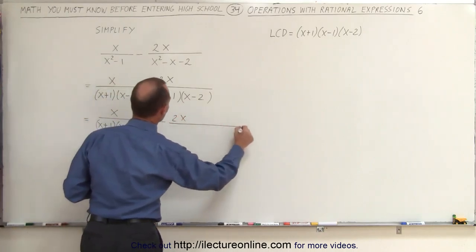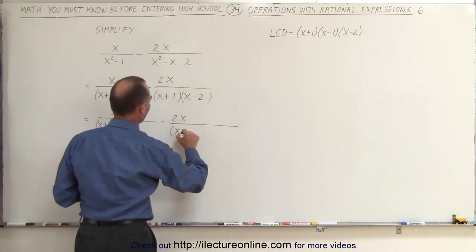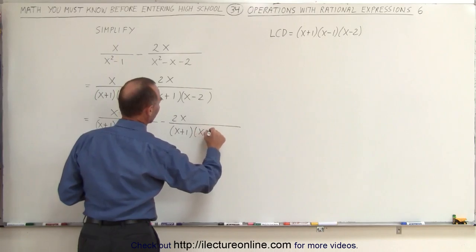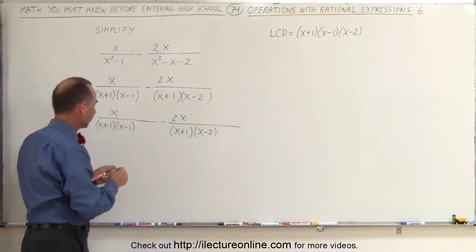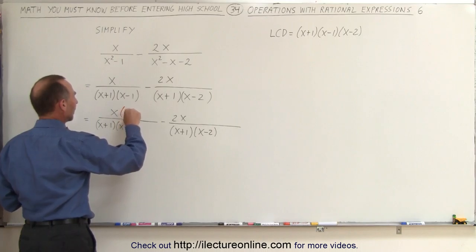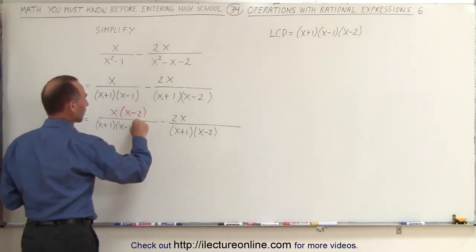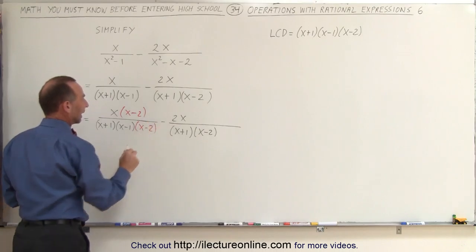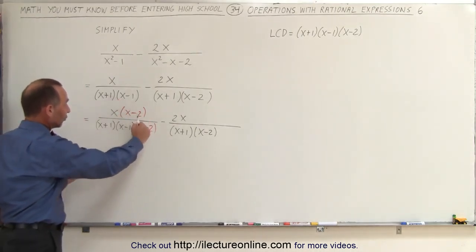Let me rewrite it so I have a little bit more room. So x divided by x plus 1, x minus 1, I'll leave a little bit of room right here, minus 2x divided by x plus 1, x minus 2, and leave some room there.